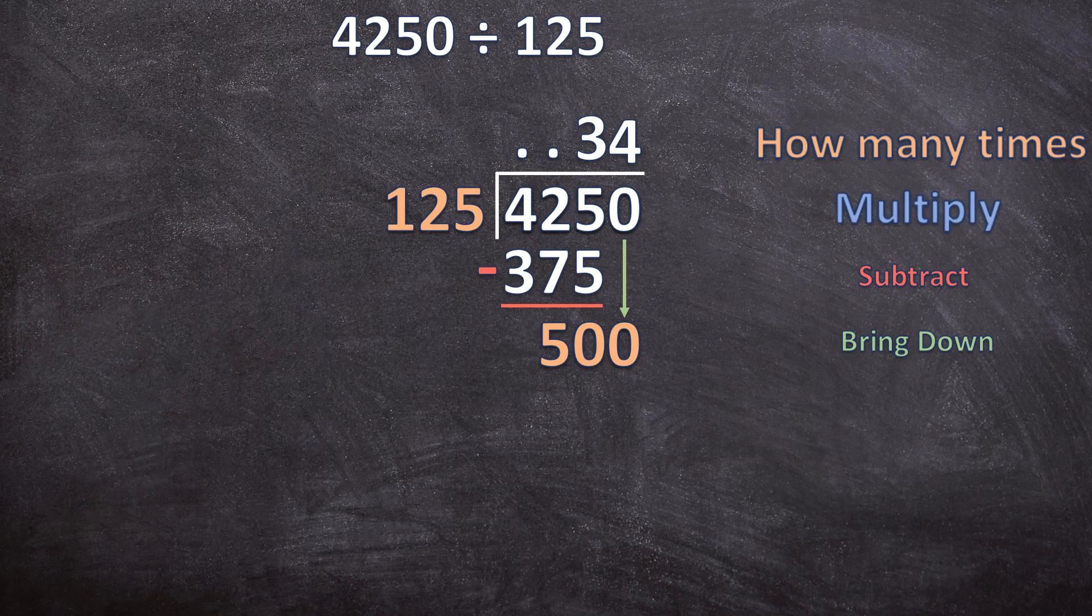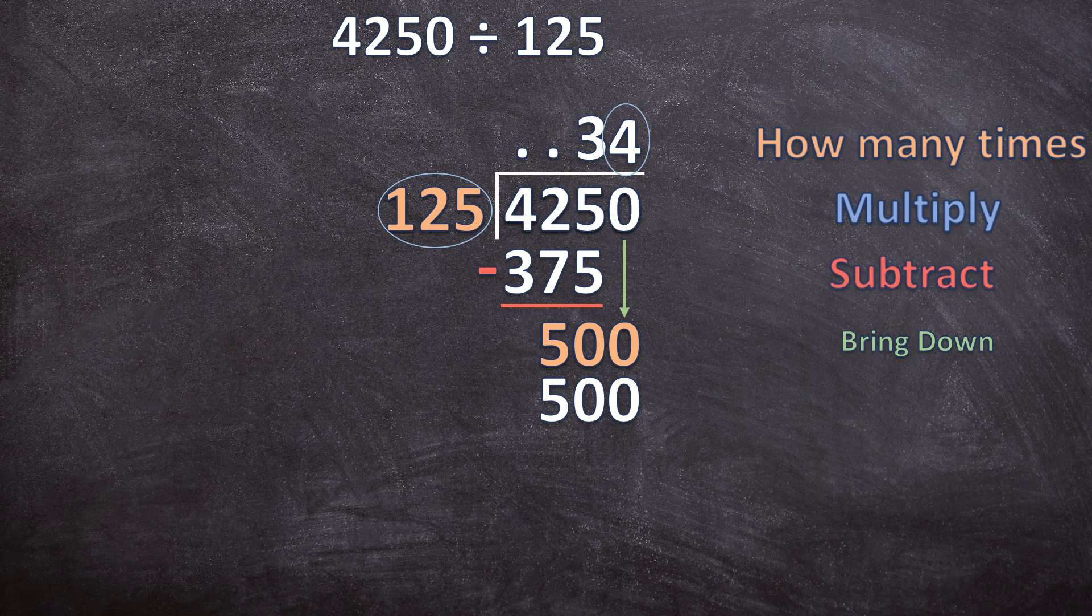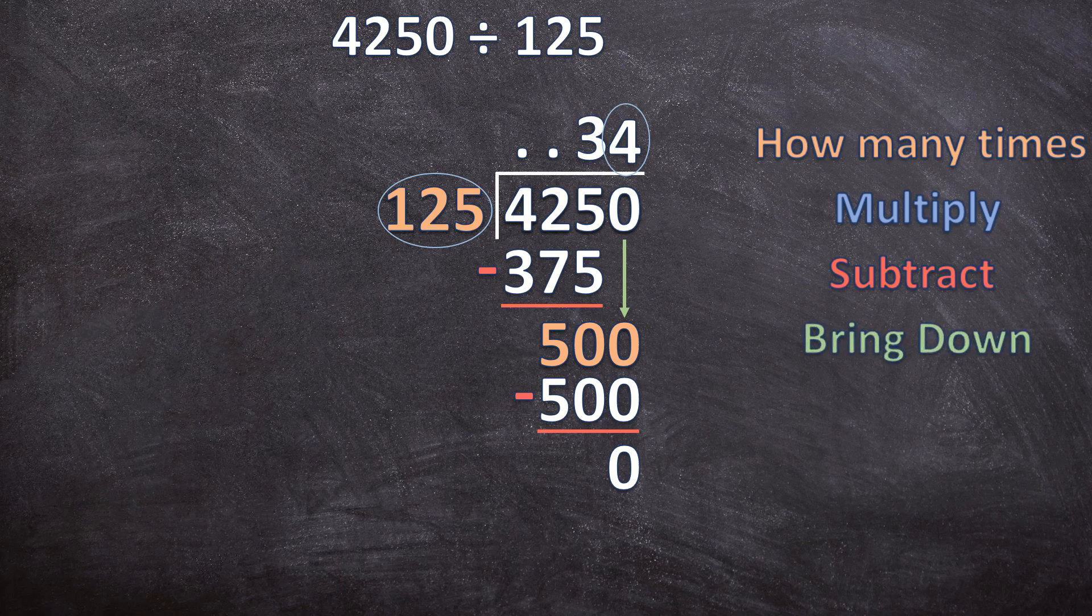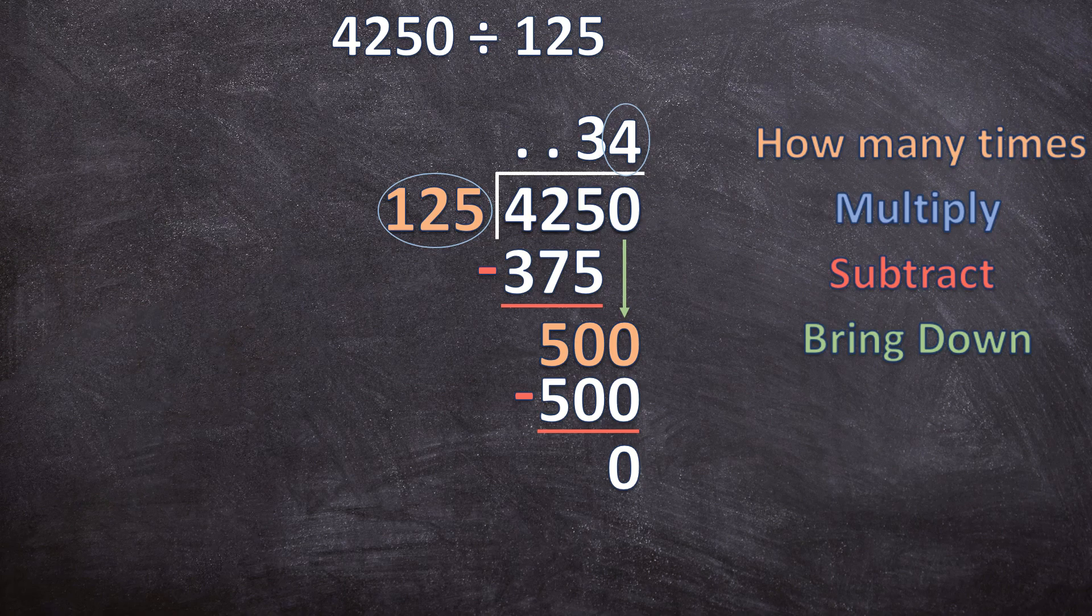Now we multiply. 4 times 125 is 500. We subtract. 500 minus 500 is 0. And we bring the next digit down. But there's not another digit to bring down. We end it with a 0, so there's no remainder. So our answer is 34.